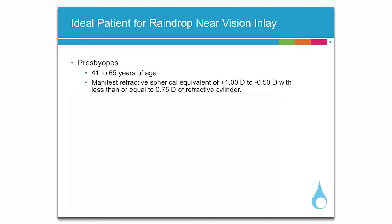They should have a manifest refractive spherical equivalent (MRSE) between plus 1 diopter to negative 0.5 diopters, with less than or equal to 0.75 diopters of refractive cylinder.